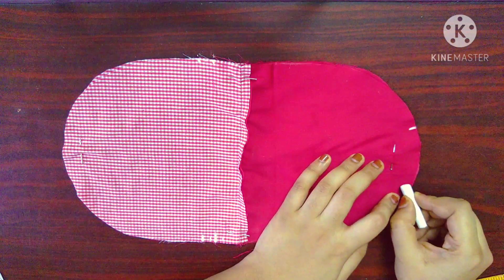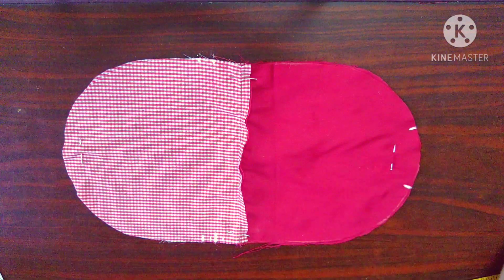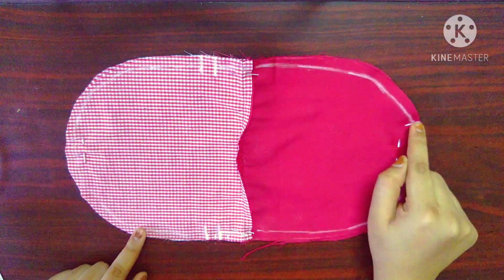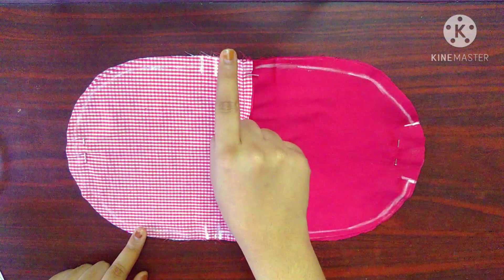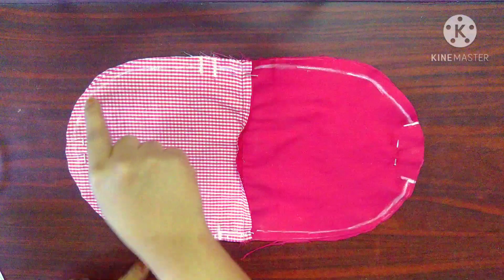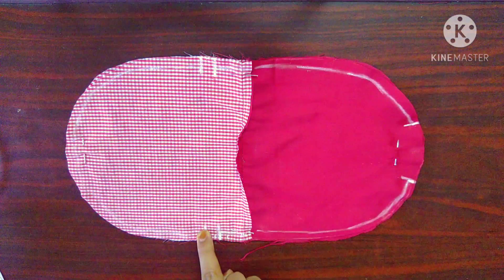I will mark two points on the lining fabric which are 2 inches apart. I will start stitching from this point with 1cm seam allowance such that all the three spaces that I have made remain unstitched.